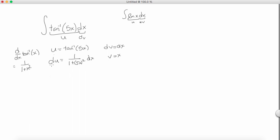Now using integration by parts, this is going to be equal to u times v, which is x, times the arctangent 5x.